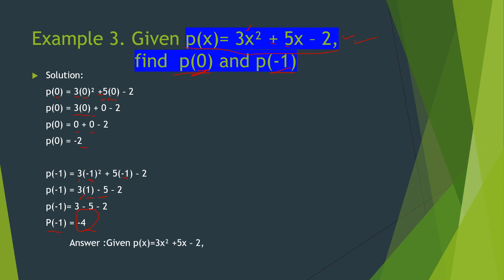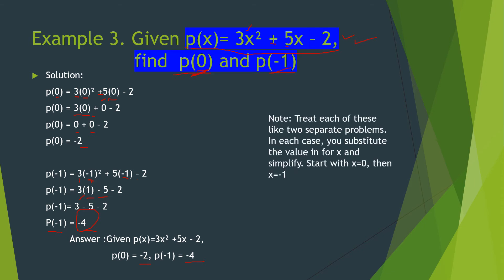So the given function p of x is equal to 3x squared plus 5x minus 2: when p at 0, the answer is negative 2, and when p at negative 1, the value is negative 4. Note: treat each of these like two separate problems. In each case, you substitute the value in for x and simplify — starting with x equal to 0, then x equal to negative 1.